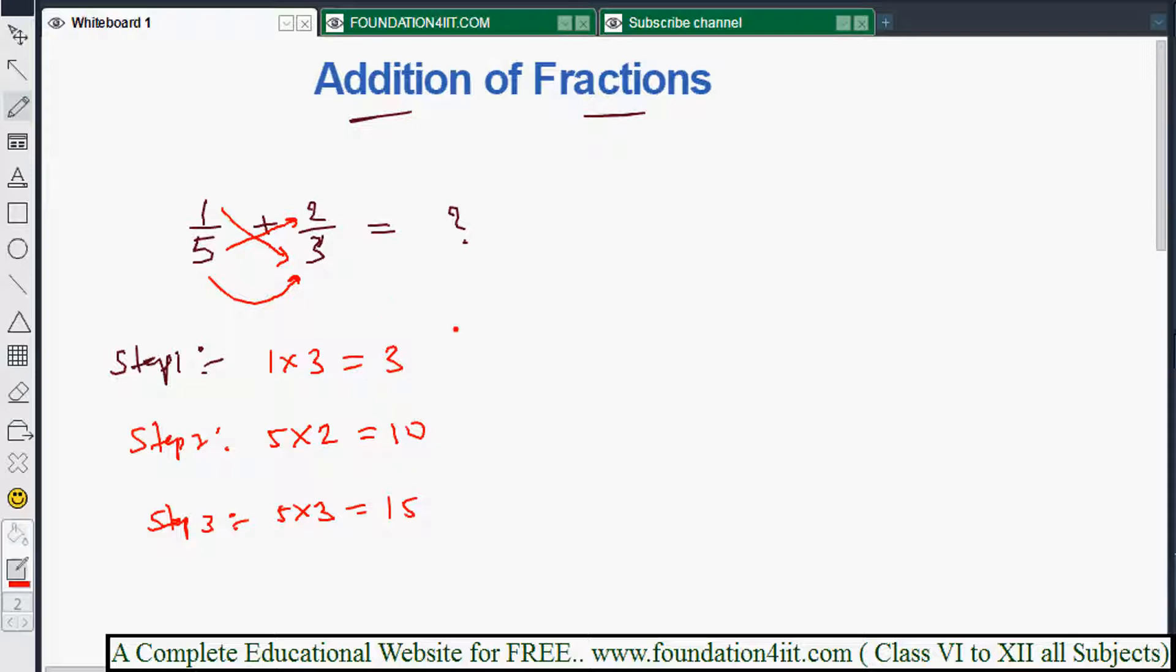First you do cross multiplication: 3 plus 10, step 1 and step 2 will add, divided by 5 into 3 is 15. This one: 3 plus 10 is 13 by 15 is the answer. So by seeing the question only you can multiply and write.